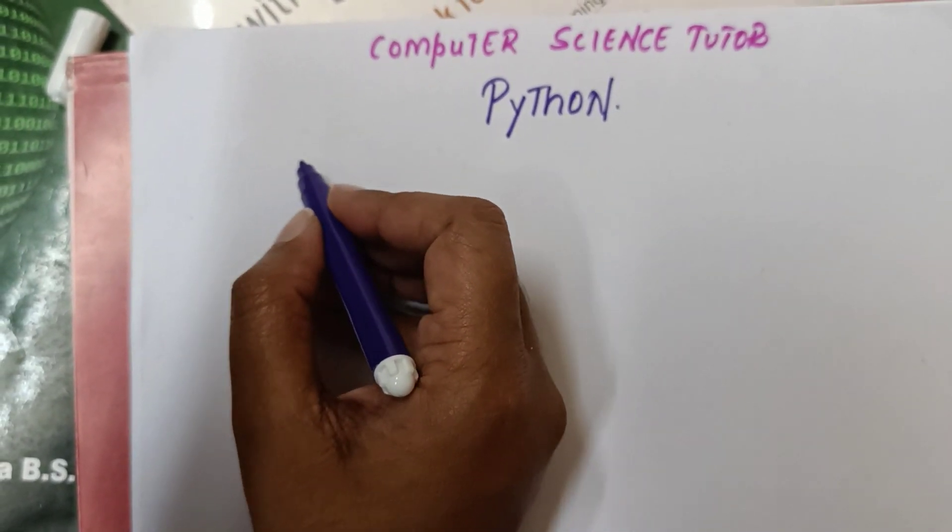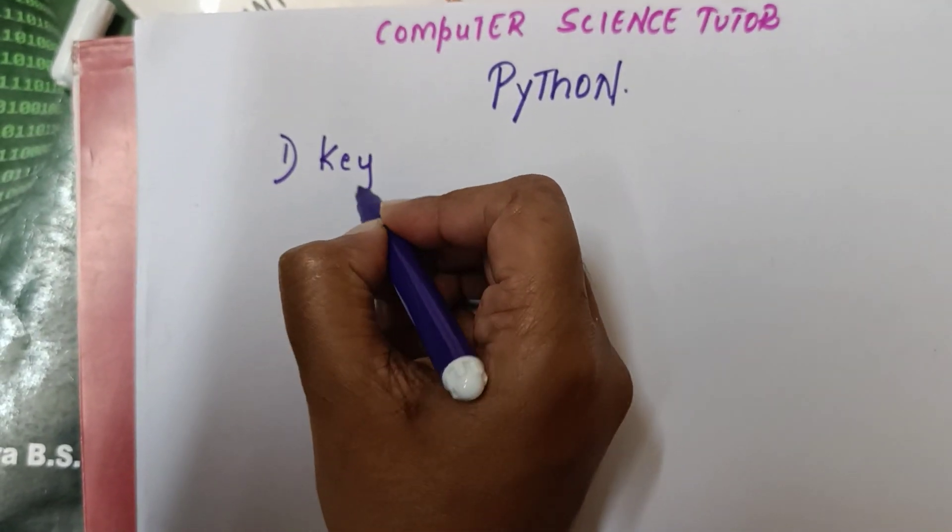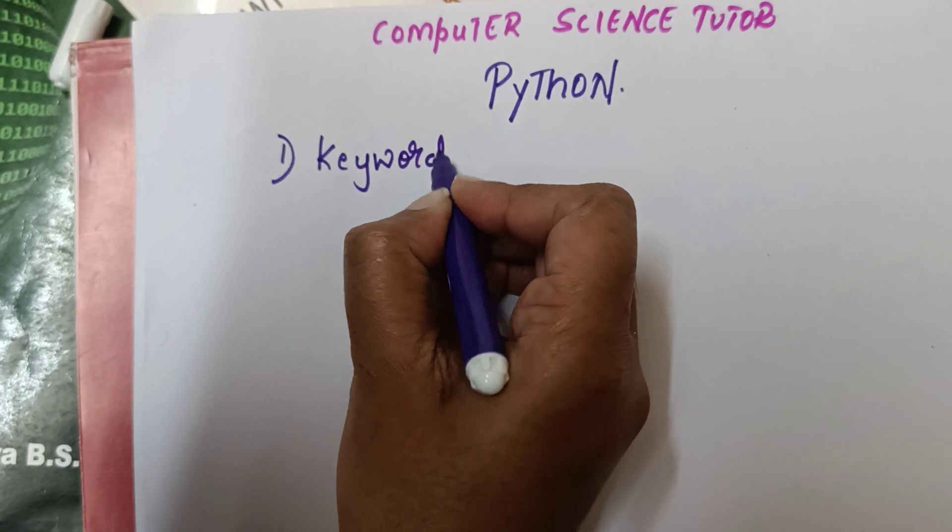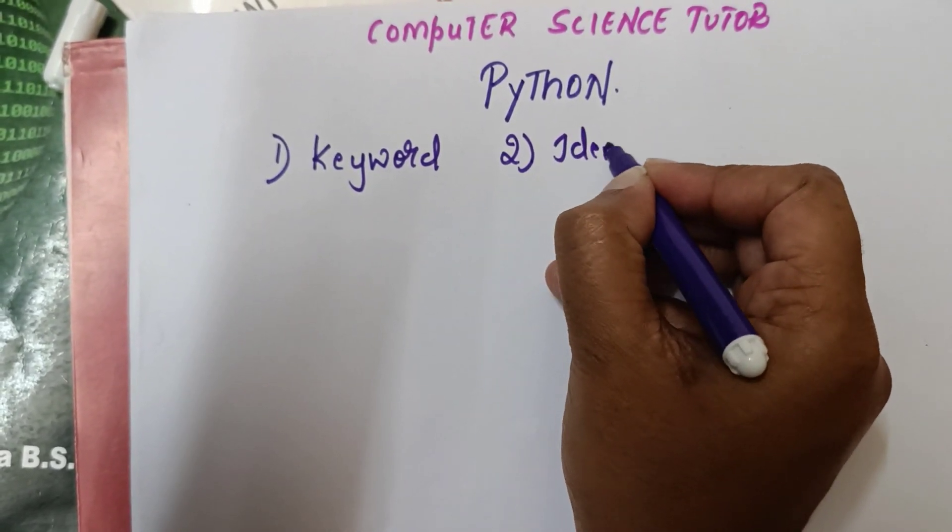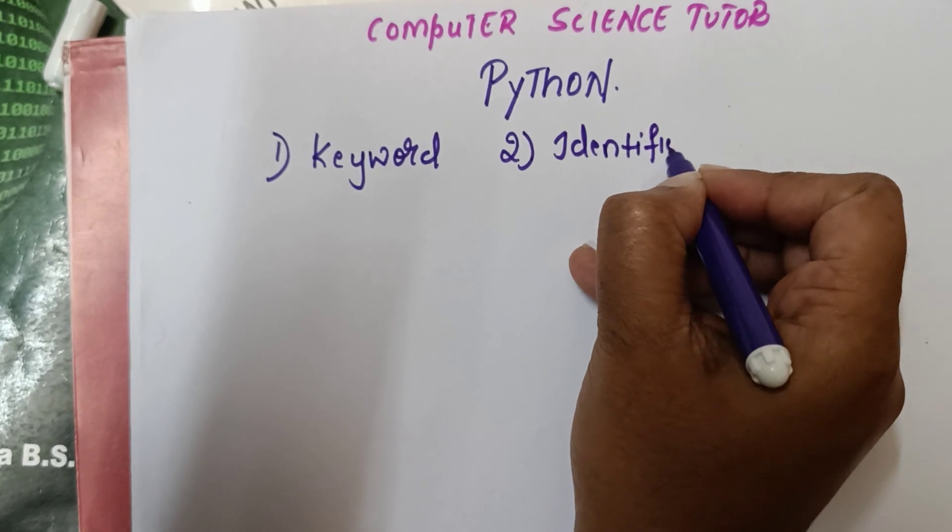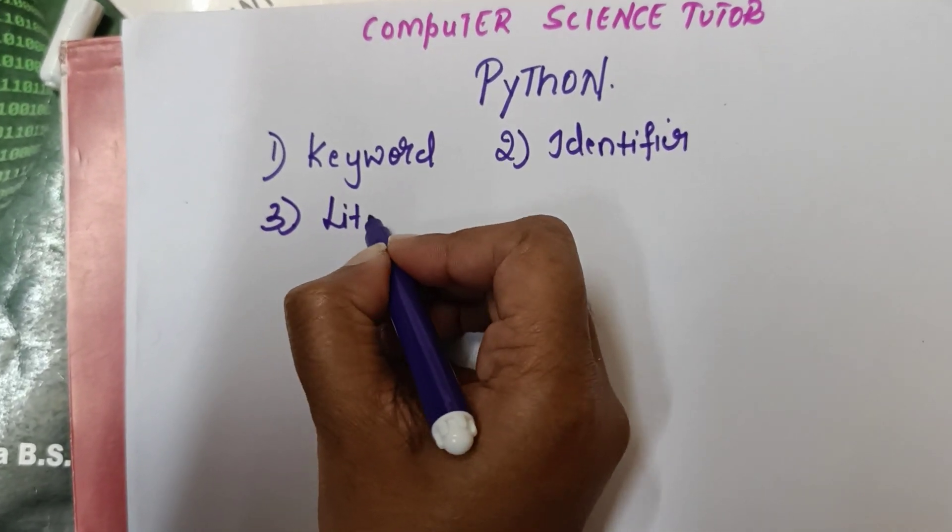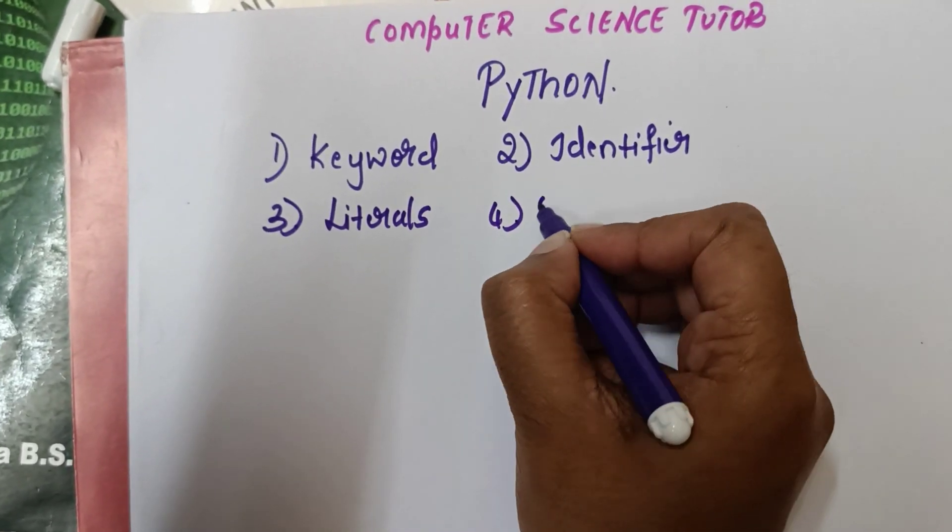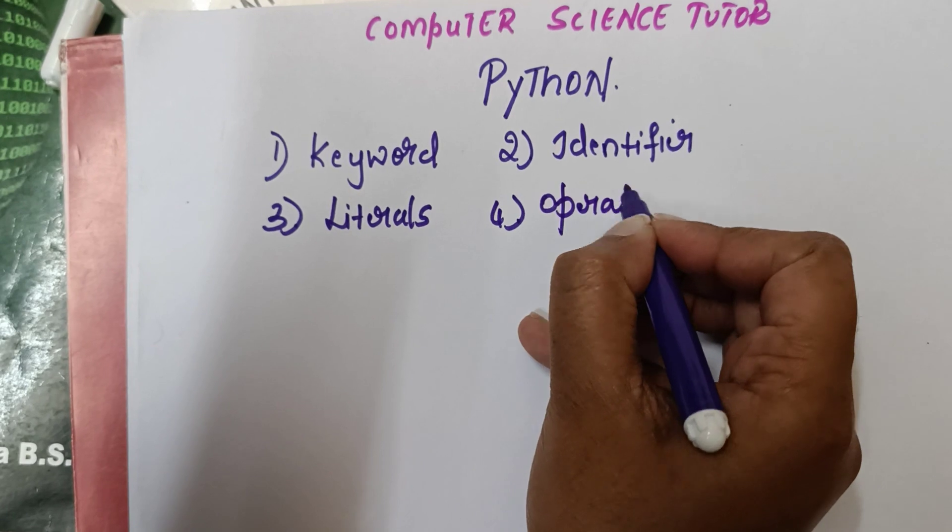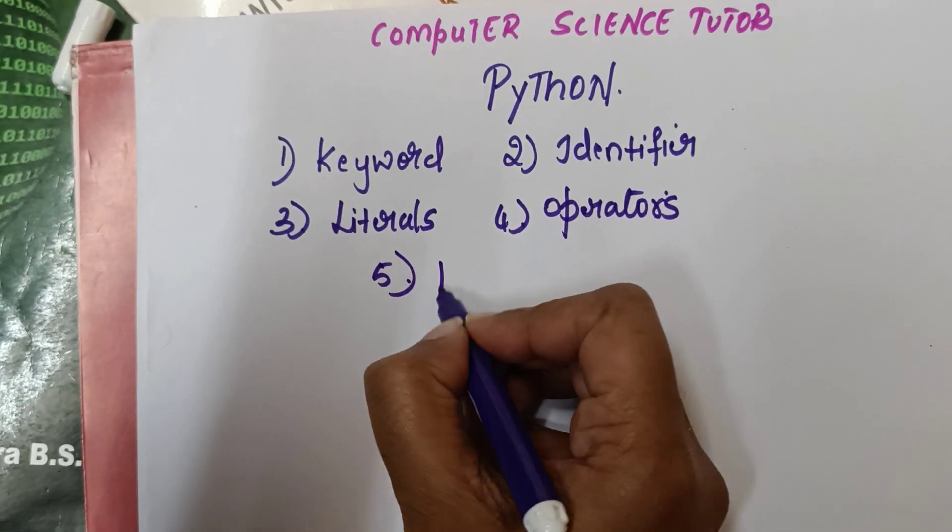Some basics are: First, Keyword. Second one, Identifier. Third one, Literals. Fourth one, Operators. Fifth one, Punctuators.